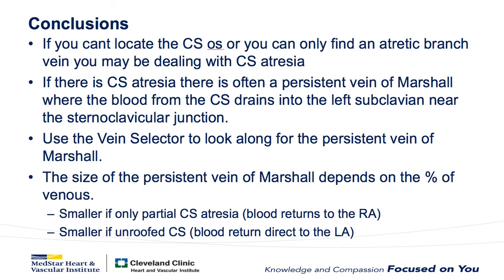We implanted down the vein of Marshall. In conclusion: if you can't locate the CS ostium, or you can only find an atretic branch vein, you may be dealing with CS atresia. If there is CS atresia, there is often a persistent vein of Marshall where the blood from the CS drains into the left subclavian near the sternoclavicular junction. You can use the vein of Marshall and a vein selector to implant down it or to gain access into the coronary sinus by advancing a wire into the right atrium. The size of the persistent vein of Marshall depends on the percent of venous return going up the vein of Marshall — it will be smaller with partial CS atresia, and smaller with an unroofed CS, because blood returns directly into the left atrium and doesn't need to go up the vein of Marshall.